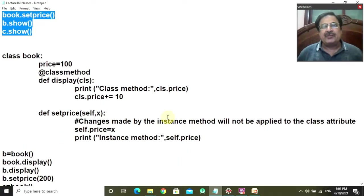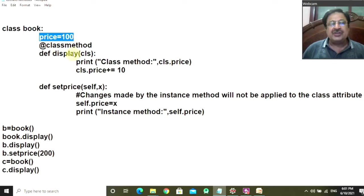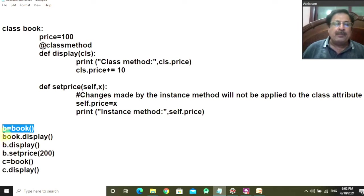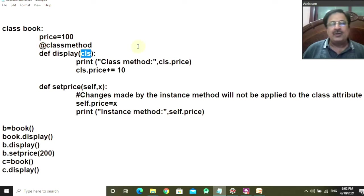Let us make the concept of class method more clear with another program. This is again class Book, this is the class attribute, and this is the class method display. You have made one object B of Book class, so the price attribute is assigned to B. When you invoke Book.display — display is a class method — you can invoke it through B.display or through Book.display. You can invoke this class method through an instance as well as through the class. Control comes here. CLS is pointing to the class itself, that is Book. On the screen you get the text 'class method' and then cls.price — you get the value 100. Now you are modifying the value, adding 10 to the price attribute, so it will become 110.